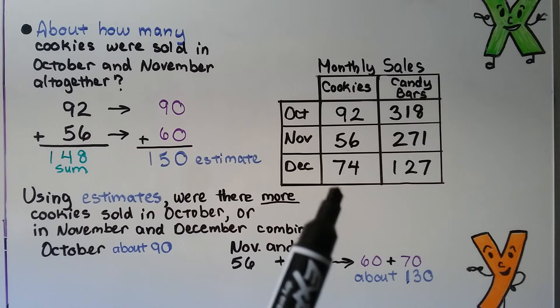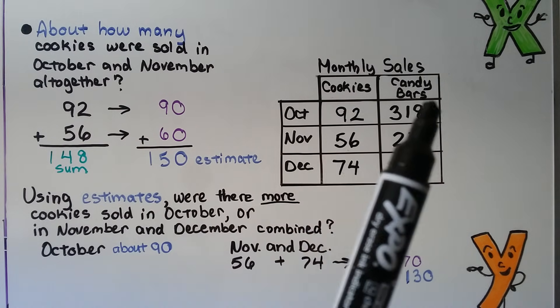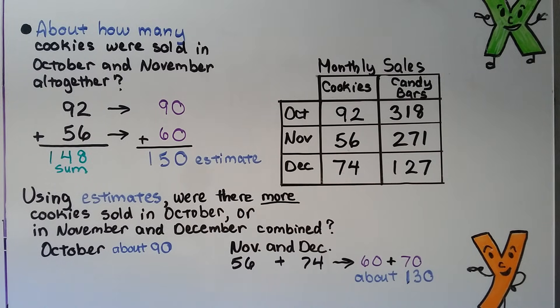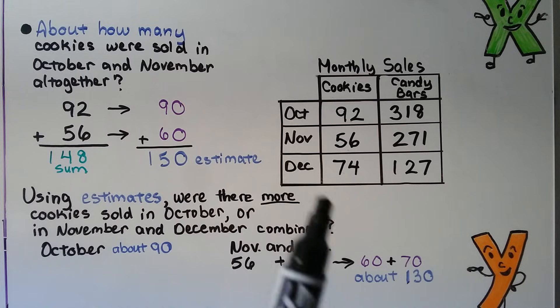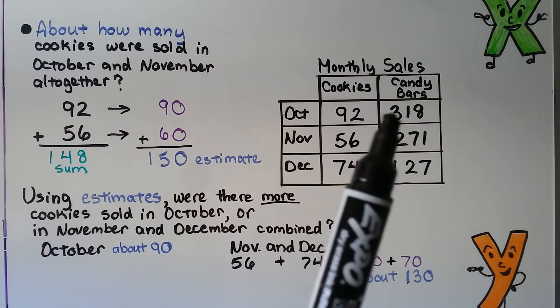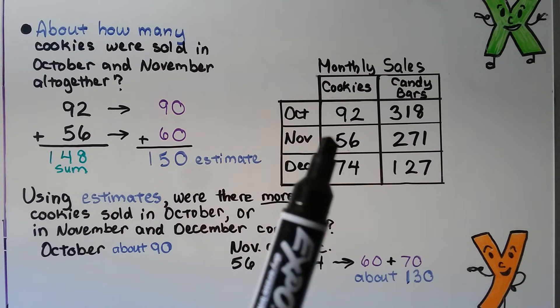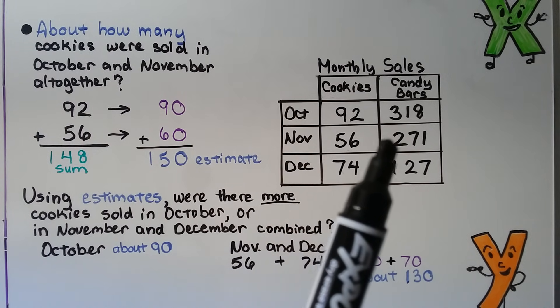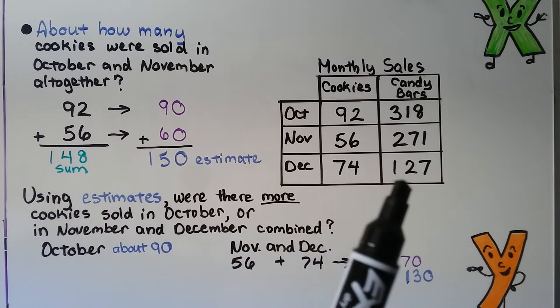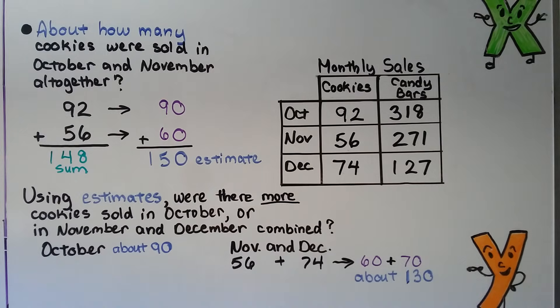Now take a look at this table right here. It's the monthly sales for cookies and candy bars in the months of October, November, and December. So we can see in October, they sold 92 cookies and 318 candy bars. In November, they sold 56 cookies and 271 candy bars. In December, they sold 74 cookies and 127 candy bars.